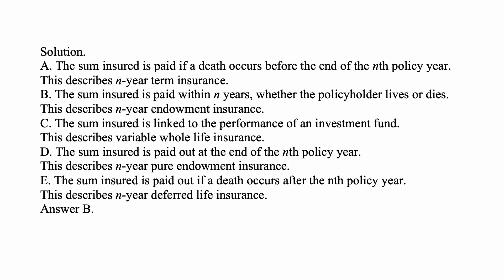Here's the solution. Answer A says the sum insured is paid if a death occurs before the end of the nth policy year — this describes an n-year term insurance, not what we're looking for. Answer B: the sum insured is paid within n years, whether the policyholder lives or dies — this describes n-year endowment insurance. This is the answer: B.